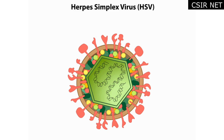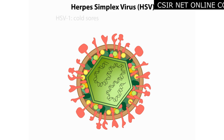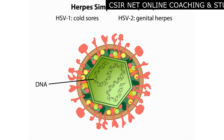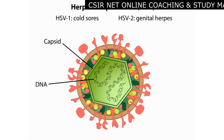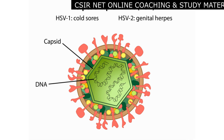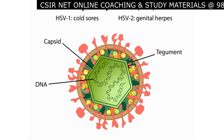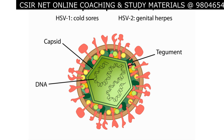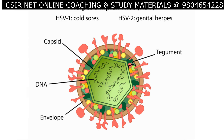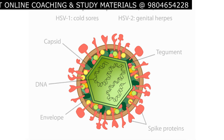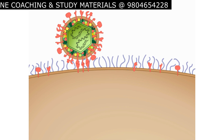An important example of a DNA virus is Herpes Simplex Virus, or HSV, strains of which cause cold sores and genital herpes. The virion consists of a double-stranded DNA chromosome packed within an icosahedral capsid. The capsid is surrounded by about 15 different kinds of virus-coded proteins called tegument proteins, which are contained within a host-derived membrane envelope that has several kinds of spike proteins on the surface.